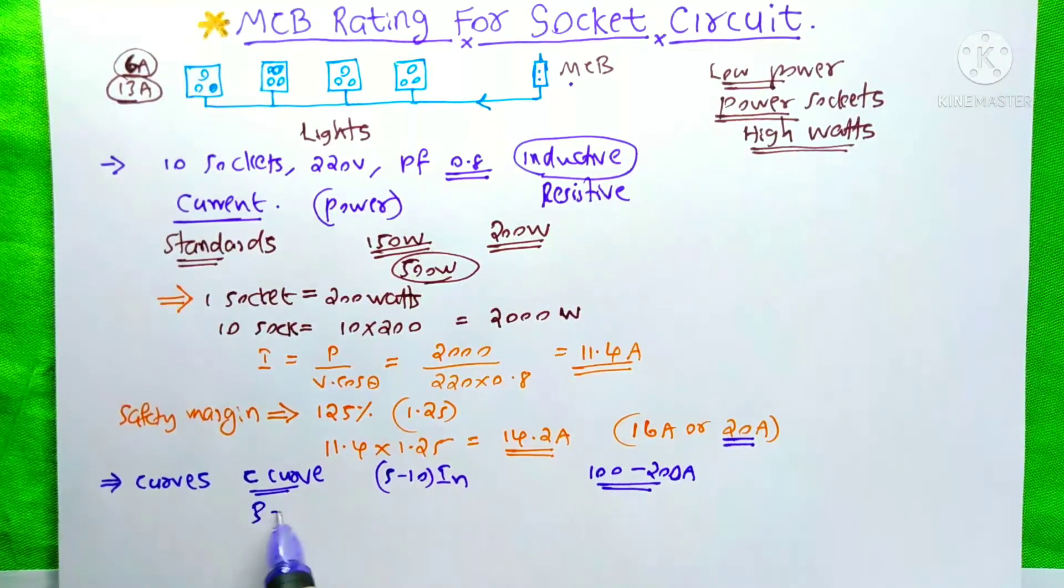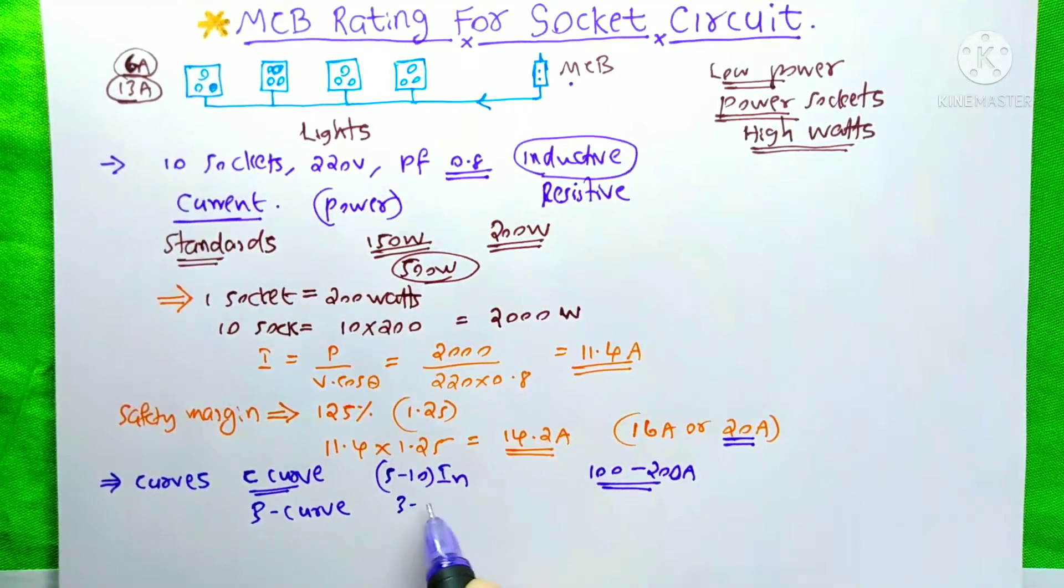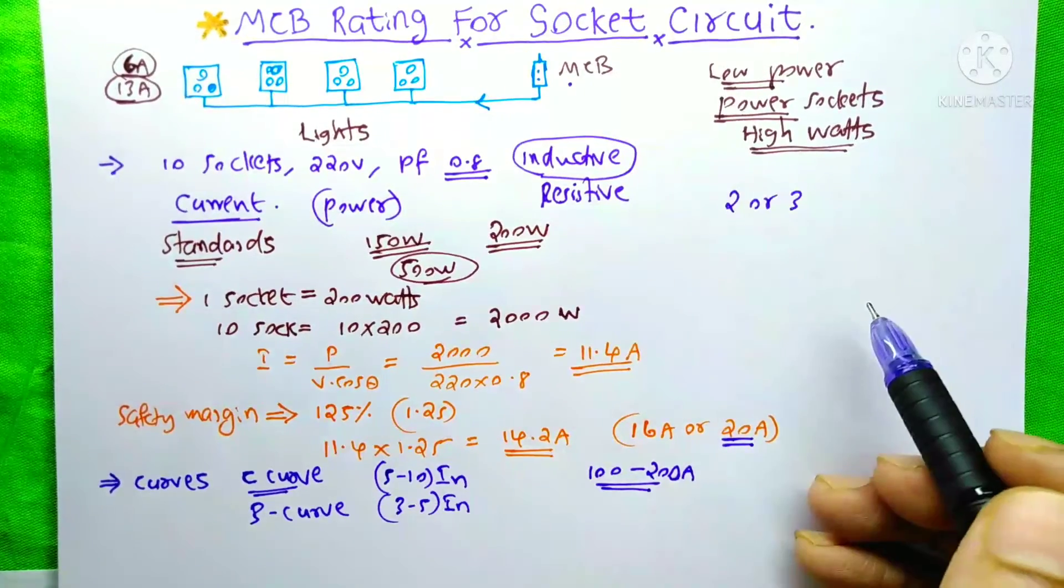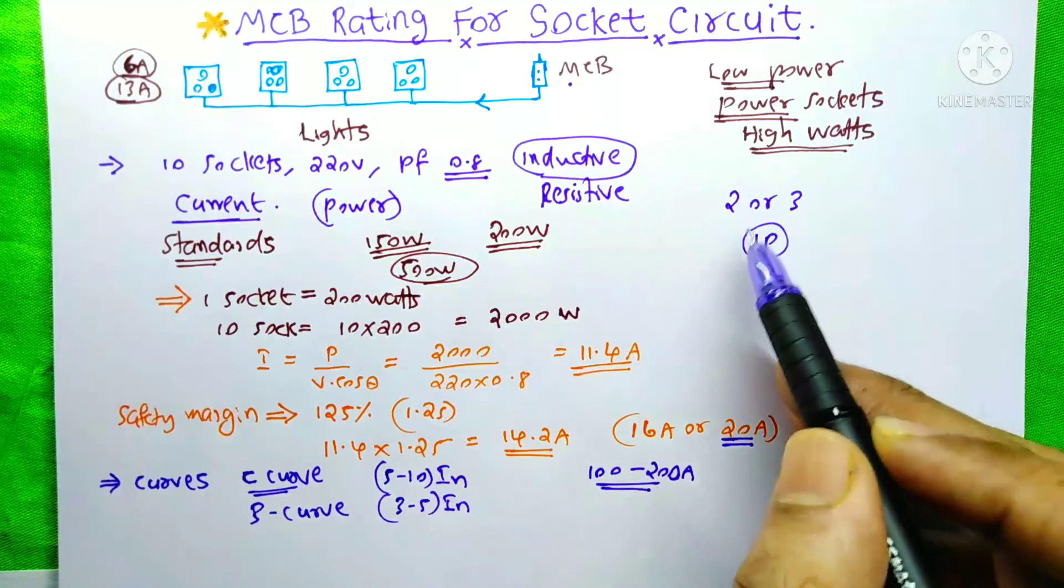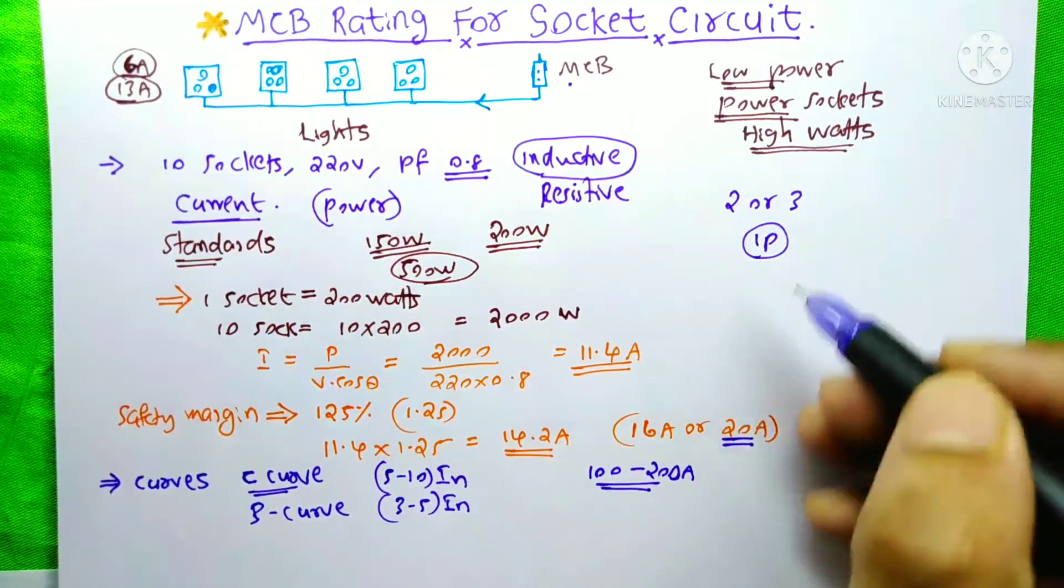But if you use a B curve, then there will be more chance for your MCB trips. Because it allows only 3 to 5 times of the rated current. And here we need only a single pole MCB. Because here we don't need to connect the neutral on this MCB.